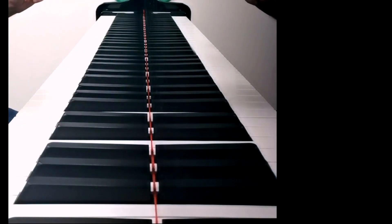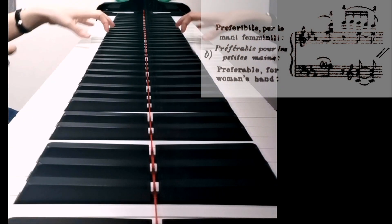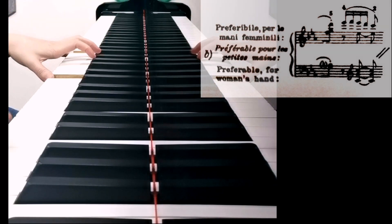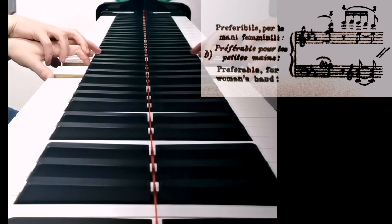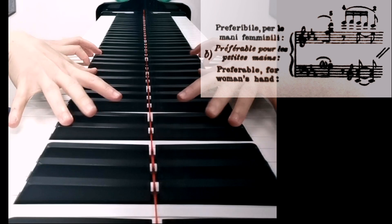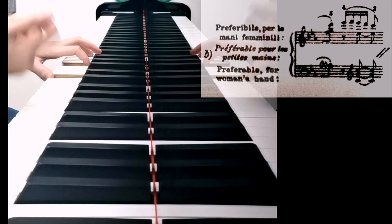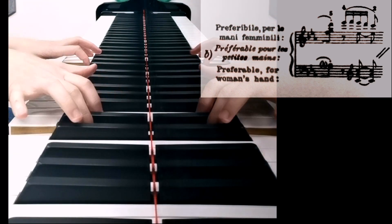And there's the advice, preferable for a woman's hand, to move this do up here and to steal one sol from the chord of the right to put it down here. So the right can play, instead of 3-5-5-4-3 and cutting the legato in the middle, we'll have 4-5-4-3-2.